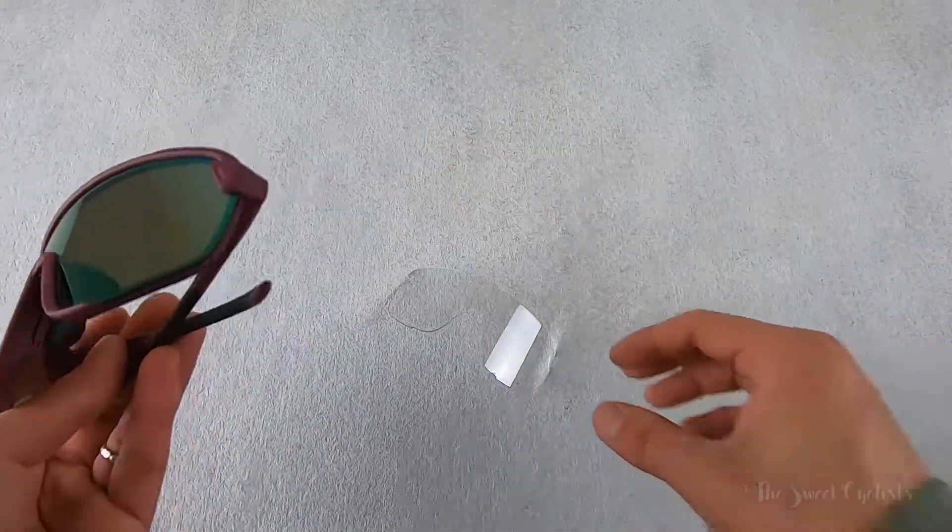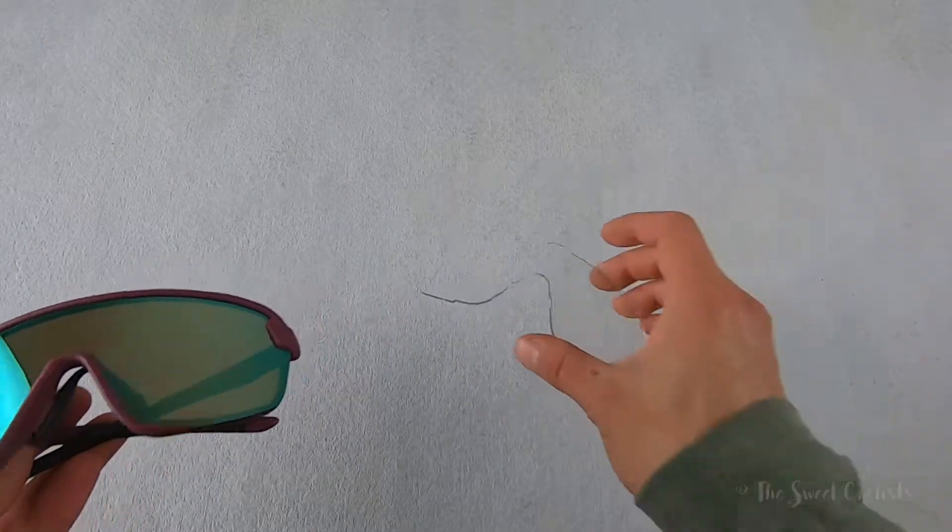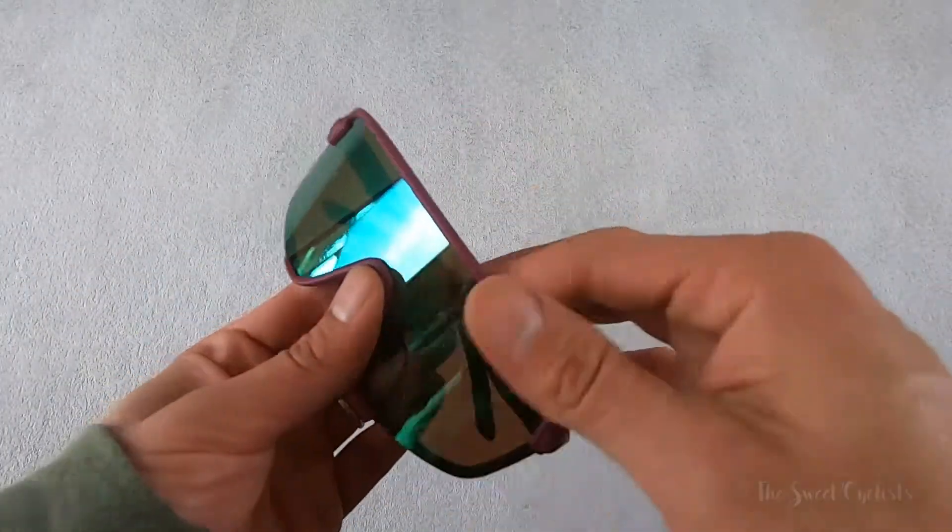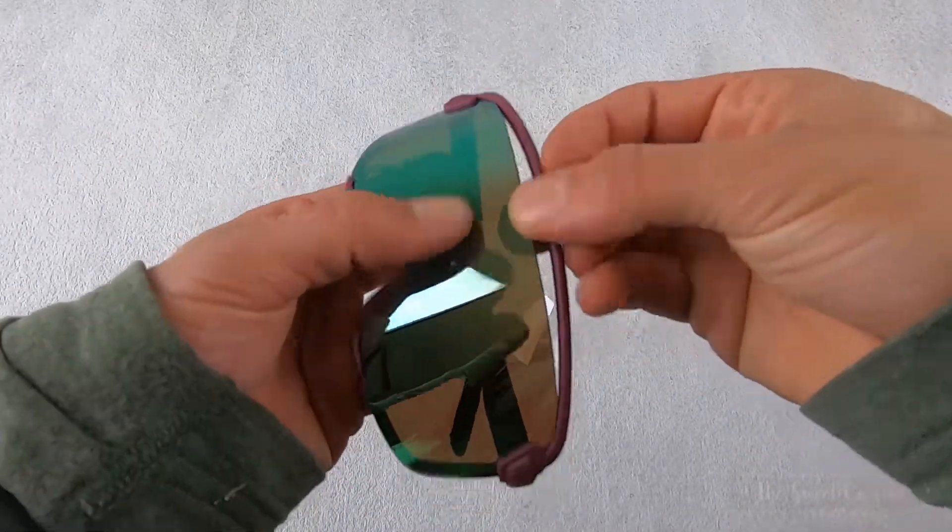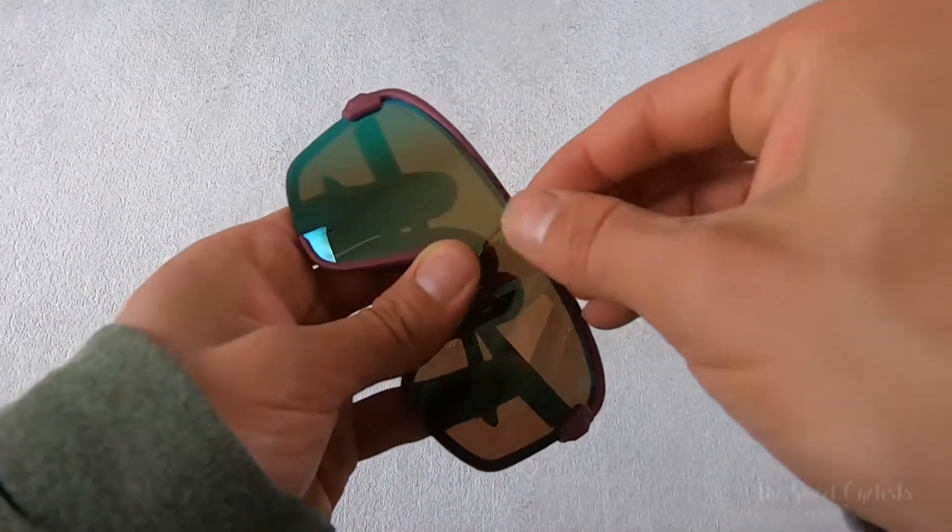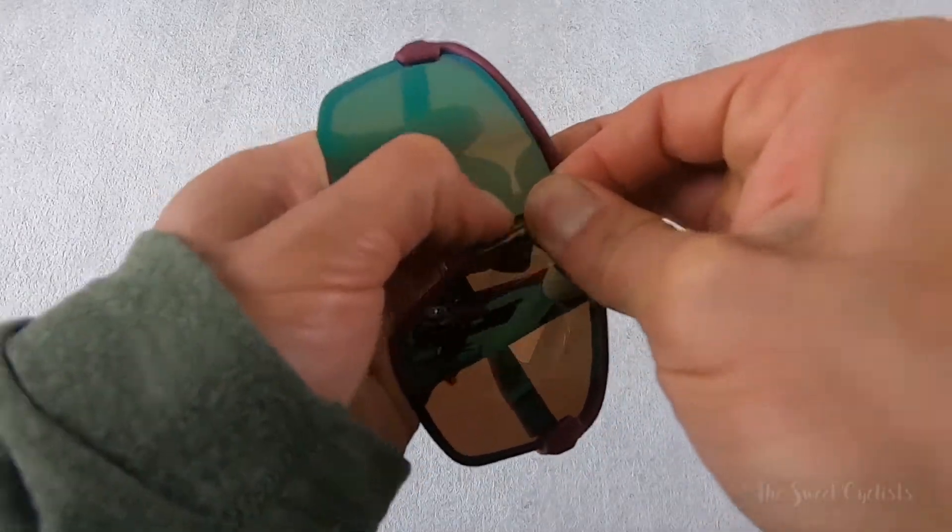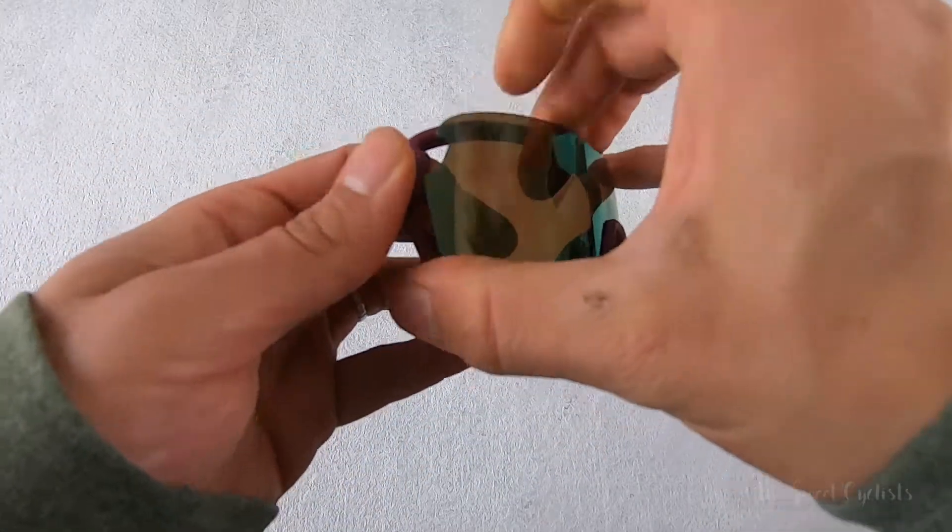These have an interchangeable lens design and they include the clear lens with it. So to swap the lens you want to grab the frame and then pull away from the lens and you can see it'll pull up. Then you want to pull the lens off the bottom nose bridge and kind of slide it out of these corners.